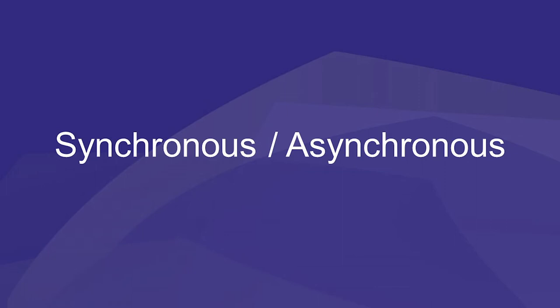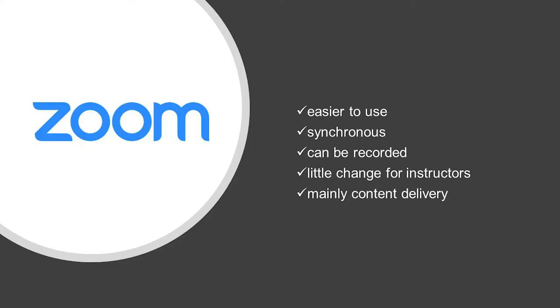This brings us to the distinction between synchronous and asynchronous learning. Why was Zoom so popular with instructors during COVID-19? First, it's easy for most instructors to use. It can be used on virtually any platform — Android or Mac, iPads, iPhones, tablets, or full computers. When broadcast live with students watching at the same time as the instructor, it's a synchronous technology. However, like many synchronous technologies, it can also be recorded, at which point it becomes asynchronous.